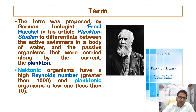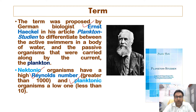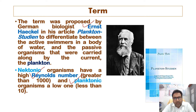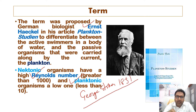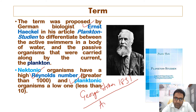The Reynolds number is greater than 1,000 for nektonic organisms and less than 10 for planktonic organisms. Reynolds number helps predict flow patterns in different fluid flow situations. The concept was introduced by George Stokes in 1851, but the term 'Reynolds number' was coined by Arnold Sommerfeld in 1908.